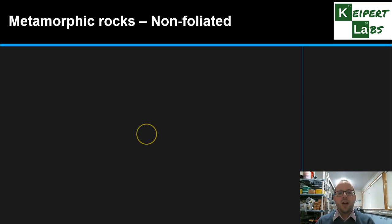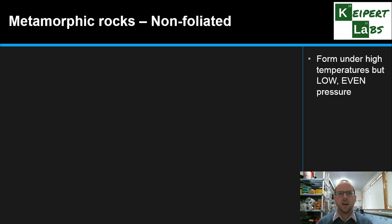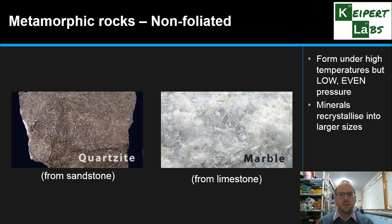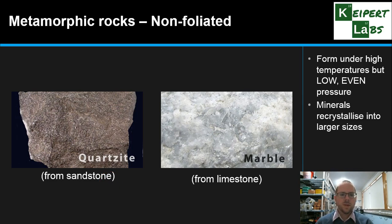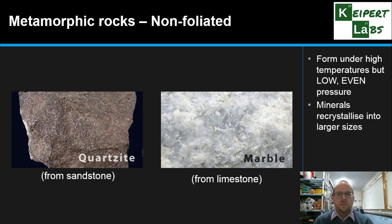Non-foliated metamorphic rocks form under high temperatures but low, uniform pressure, so they're not being strongly squashed. Here the minerals recrystallise into larger sizes due to the temperatures. Quartzite comes from sandstone that has been heated and changed, producing quartz with a similar chemistry but quite different appearance. Marble comes from limestone — chemically the same as limestone, but transformed by heat and pressure so its appearance and structure are very different, while retaining similar properties.